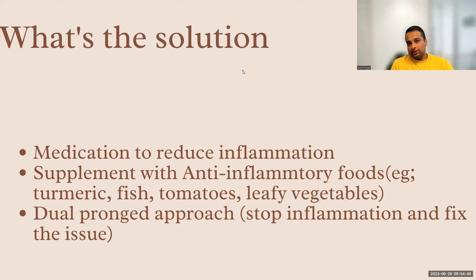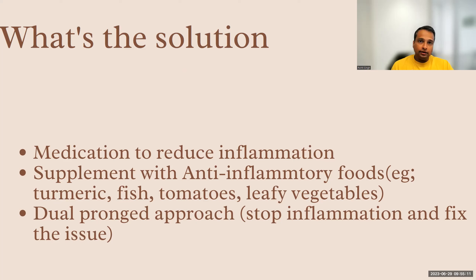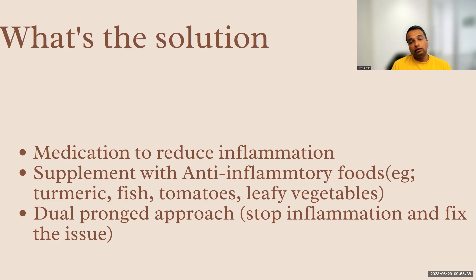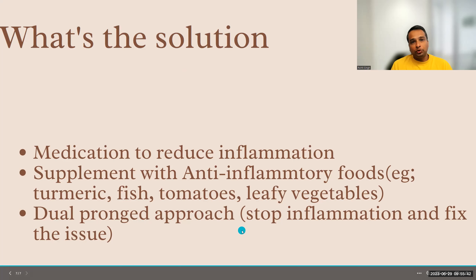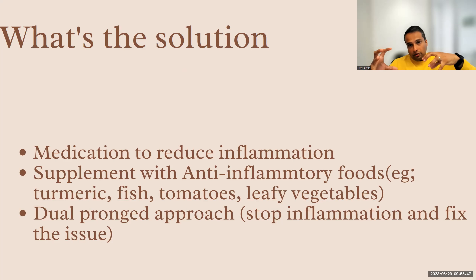So what's the solution? You need medication to reduce the inflammation and also work on the problem itself. You can supplement with anti-inflammatory foods — there are many, and you can do a quick Google search. Some really good ones include turmeric, which is an excellent anti-inflammatory source and a very good spice to have in your diet. Also fish, tomatoes, and leafy vegetables. If you have chronic inflammatory issues, changing your diet to include more anti-inflammatory foods may help ease that, and supplementing with medicine will help you regain health much faster. There's a dual-pronged scientific approach to reduce inflammation and attack the cause, which will help you be much healthier.